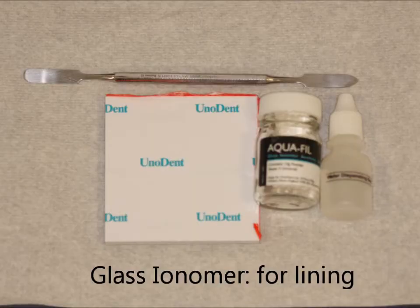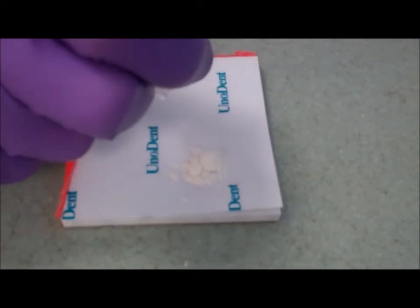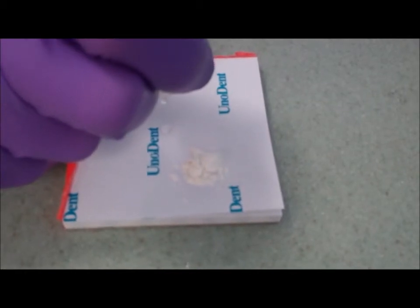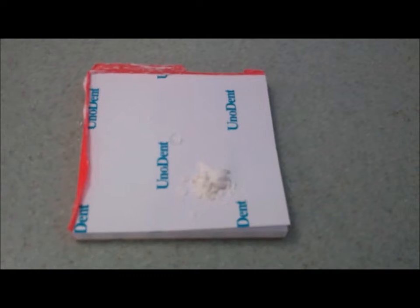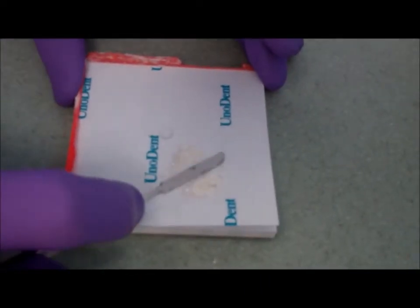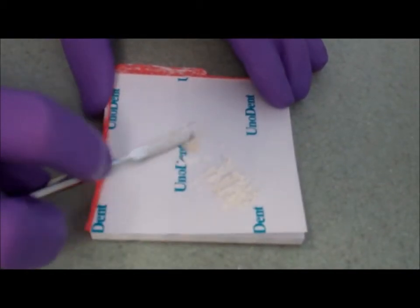If you're using glass ionomer as a lining material, you're going to take enough powder, usually a couple of scoops, and put out an equal amount of water from a dropper. A dropper bottle needs to be held directly upright to get a proper sized drop. Segment your powder into increments, and then just add a small amount of powder mixed in well each time.